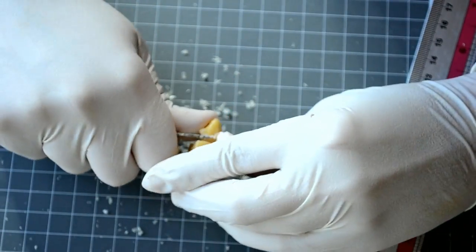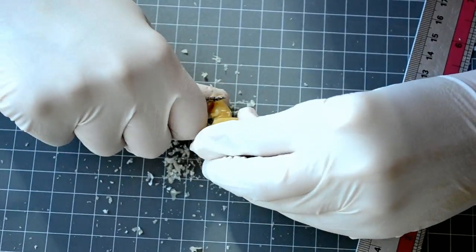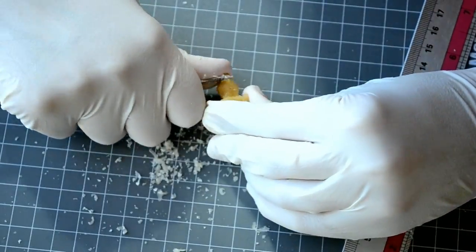Now, use your Lecron carver to carve the distal and mesial sides of the temporary cingulum until you form a prominent cingulum.